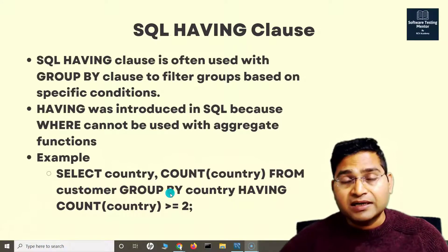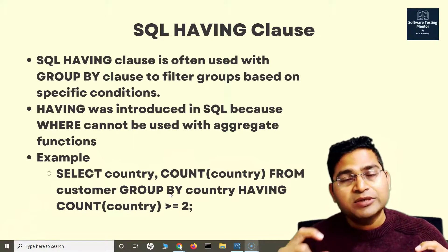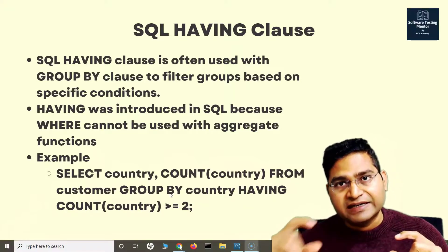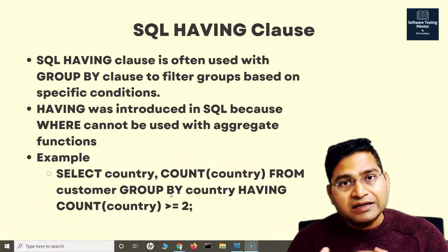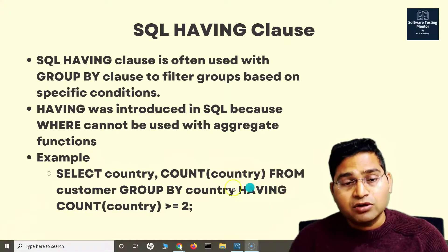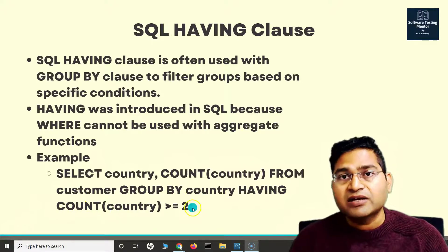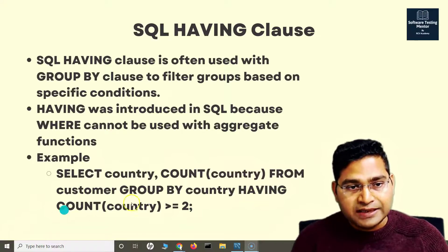Then I'm grouping by country. So if, say, there are 10 occurrences of the country India, I'm creating one group for that country and counting how many times it occurred — it will display India and 10. Then with the HAVING clause, I can filter the occurrences based on the count, saying HAVING COUNT(country) >= 2, so any country that appeared twice or more will be displayed.